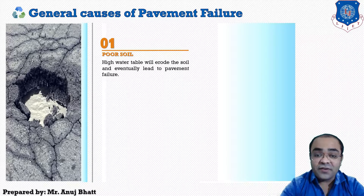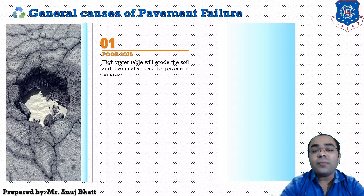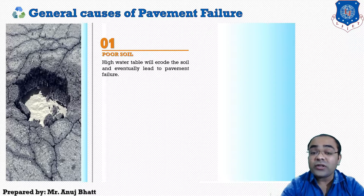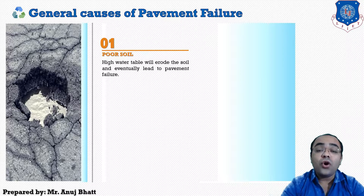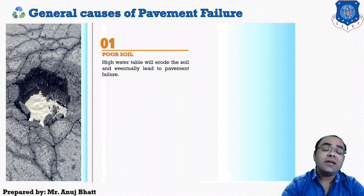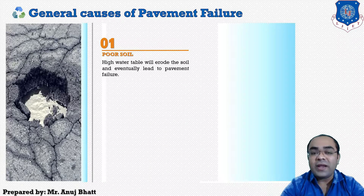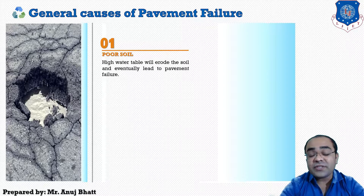If the soil condition or the geological formation of the particular ground is not accounted for at the time of construction, a high water table will erode the soil and eventually this poor soil will lead to pavement failure. Whenever we construct a road, we must check the soil condition.